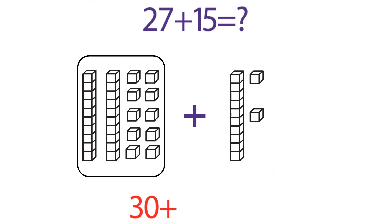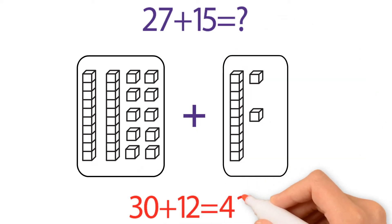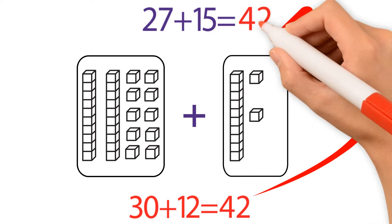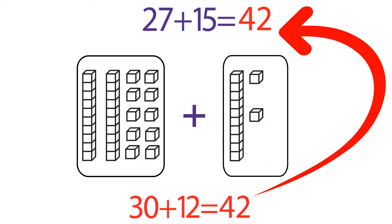30 plus 12 equals 42, which means that 27 plus 15 also equals 42.